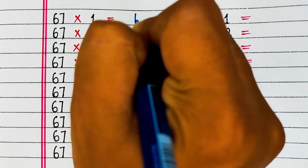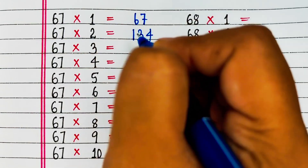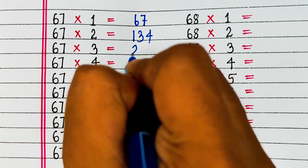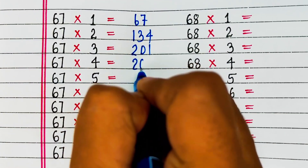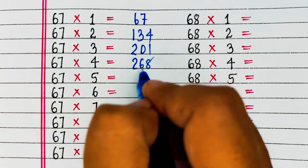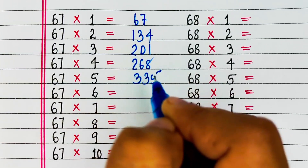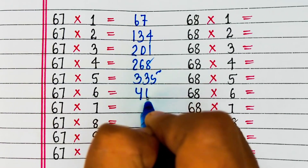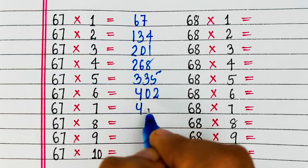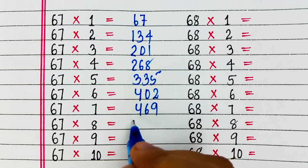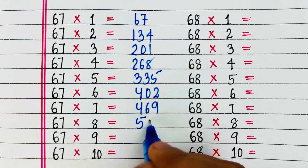Next is table of 67. 67 1s are 67, 67 2s are 134, 67 3s are 201, 67 4s are 268, 67 5s are 335, 67 6s are 402, 67 7s are 469, 67 8s are 536.